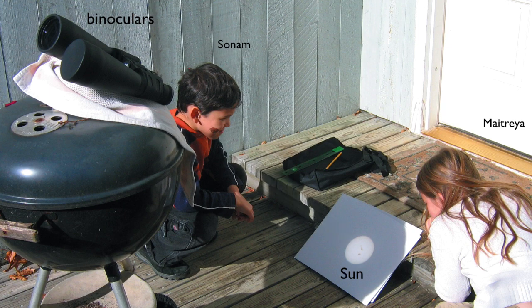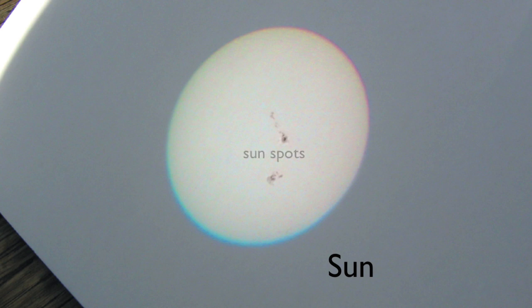Aside from the remarkable image of the sun itself, including the sunspots, they note the blue and red chromatic aberration around the edges.